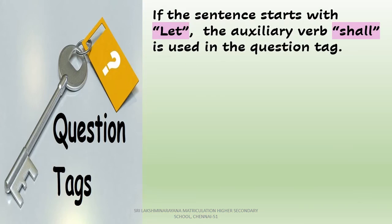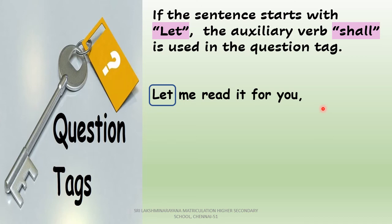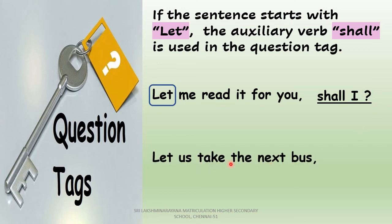Coming to the next rule: if the sentence starts with 'let,' the auxiliary verb 'shall' is used in the question tag. Look at the example: 'Let me read it for you.' This statement starts with 'let,' so we frame the question tag using 'shall' followed by the pronoun. Look at the subject — 'me' — which changes to 'I' as the subject pronoun in the question tag: 'shall I?' Look at another example: 'Let us take the next bus.' Again starting with 'let,' so the question tag is 'shall we,' with 'us' becoming 'we.'